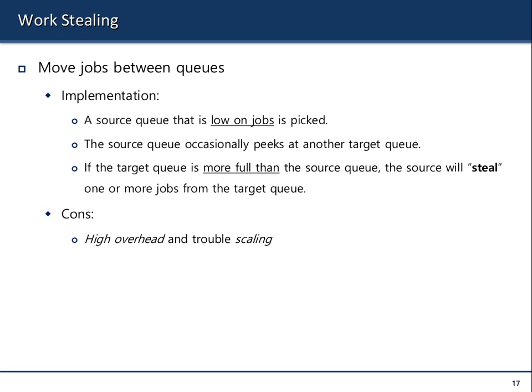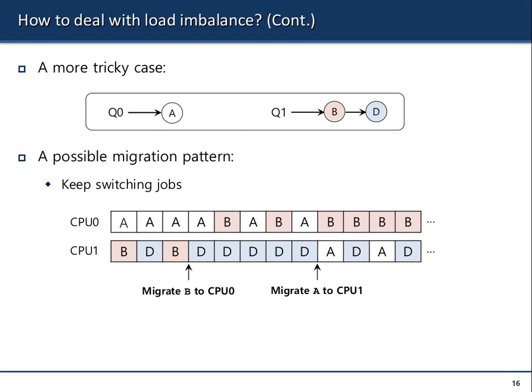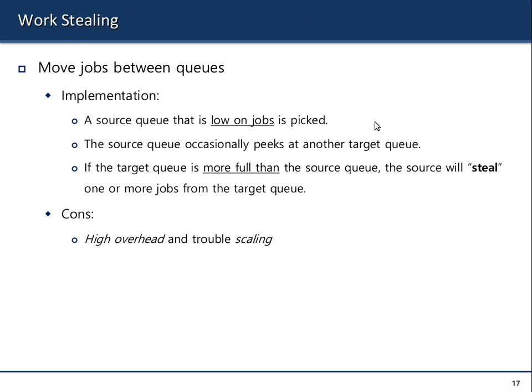This is actually called a pull mechanism — the idle queue pulls a process from the busier queue. The other approach is called push: when a queue is full, it sees an idle queue and pushes some processes to it. That's how the operating system handles load balancing via work stealing.